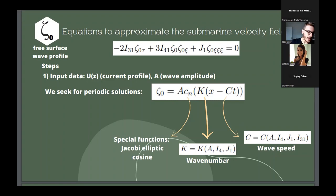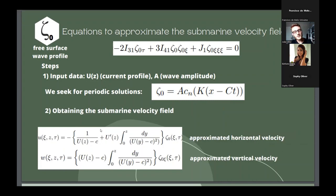So, once this is all made, we can finally obtain the velocity field. And here, we have a Python segment lab to solve it. We can obtain an approximation for the horizontal velocity, an approximation for the vertical velocity. We can see that it depends on the current, and depends on the free surface wave profile here, and some constants.